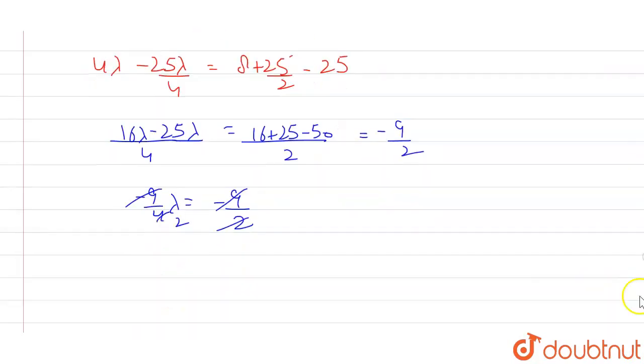So minus 9 minus 10 cancel out. This will become 2. So the value of lambda will come out as what? 2. Okay.